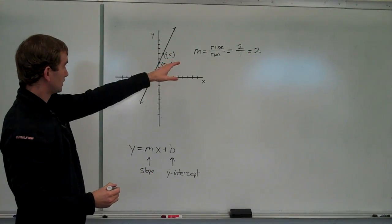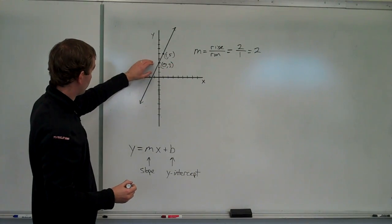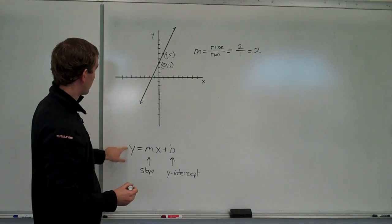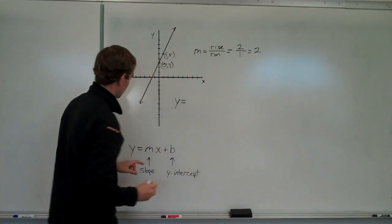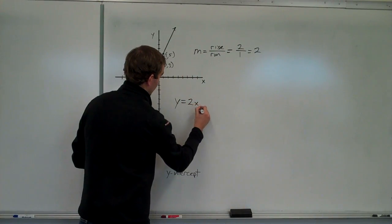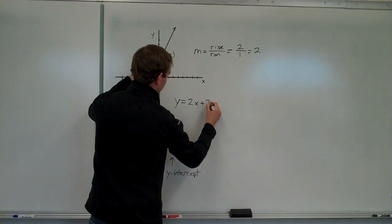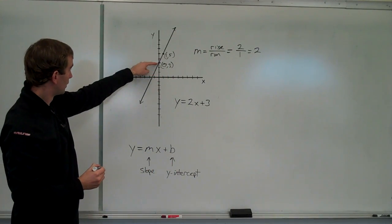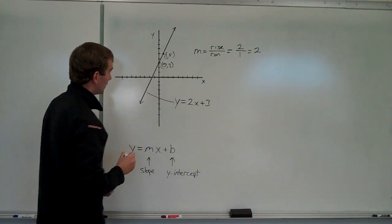So using that information, we now know what M is, our slope, and we know what B is. It's going to be three, right? Our y intercept. We can write the equation of this line really quite easily. Y equals our slope again, which was two times x plus B. In this case, B was three. Three units above the origin is where it crossed. Now, that's the equation of that line there.